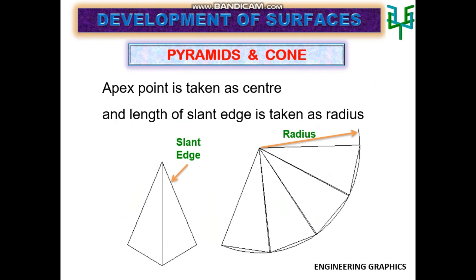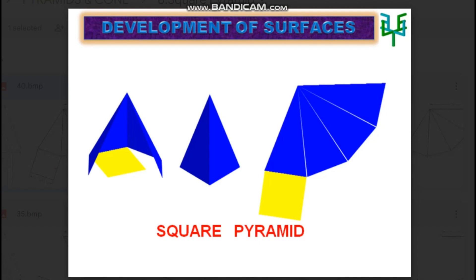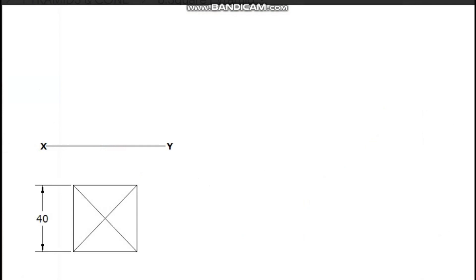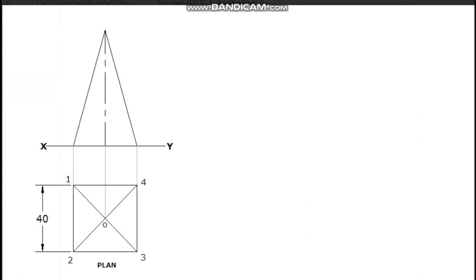While drawing the development of a square pyramid, the plan and elevation of the pyramid with the given position are to be drawn first. Measure the length of the slant edge from the elevation. For obtaining the true length of the slant edge in the elevation, the plan of the same edge should be parallel to the XY line. If none of the slant edges in the plan are parallel to the XY line, we have to rotate and bring one slant edge parallel to the XY line.